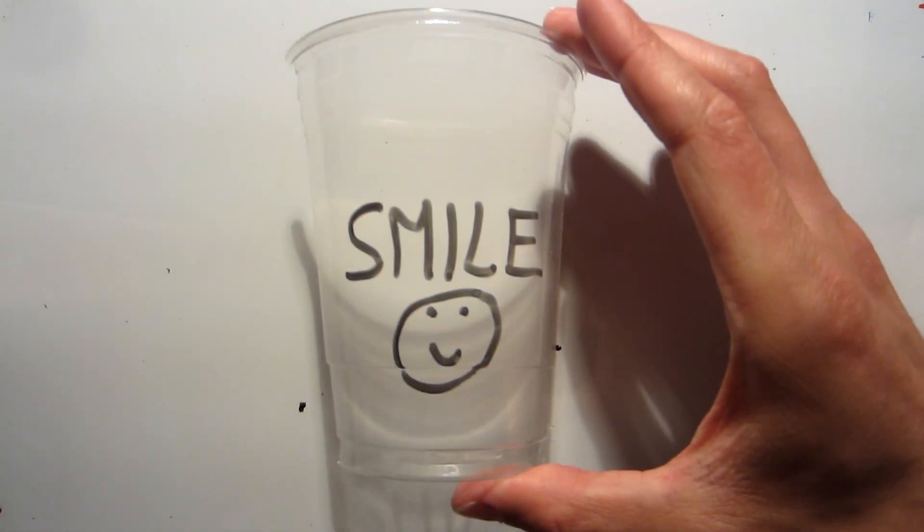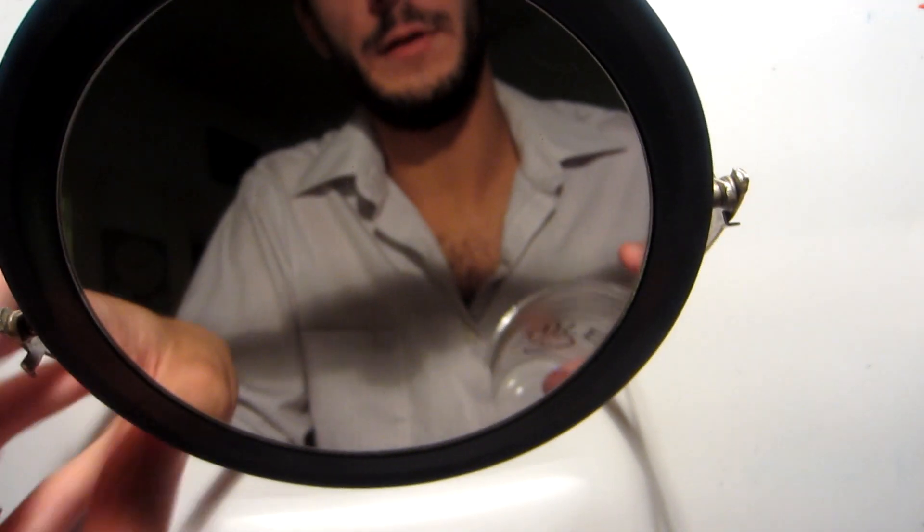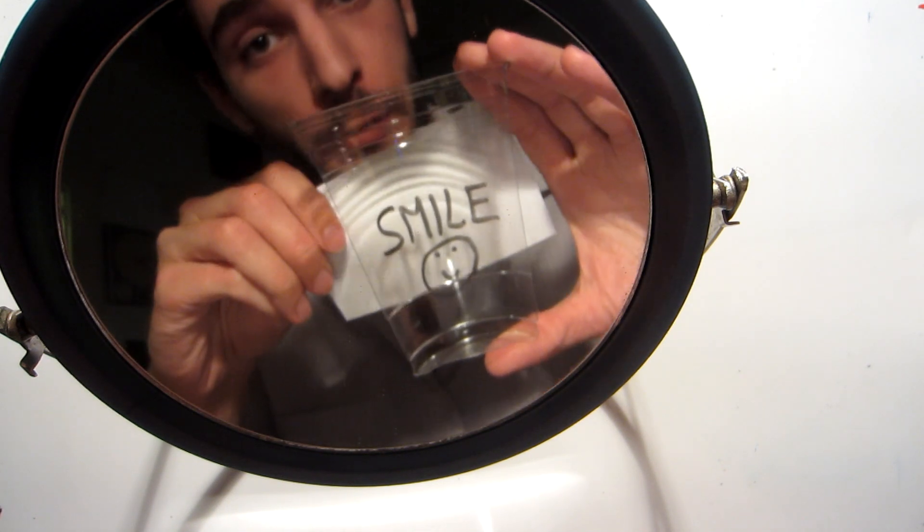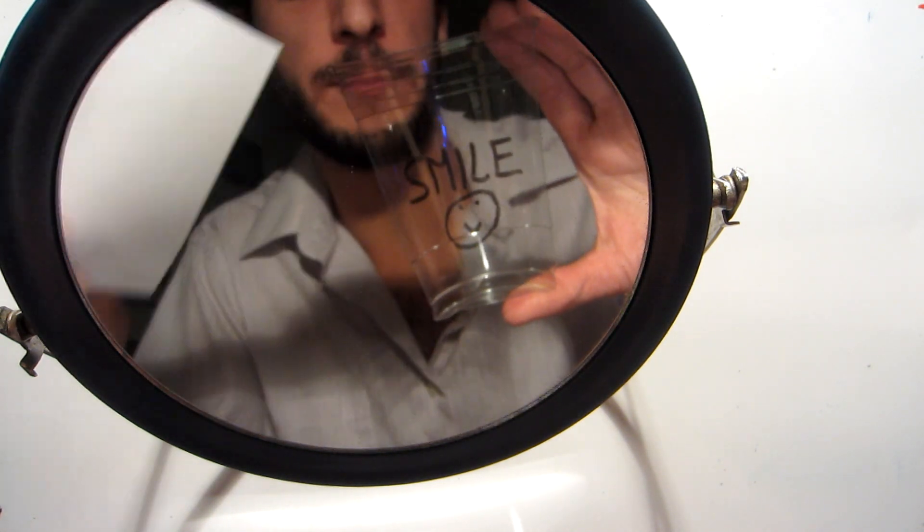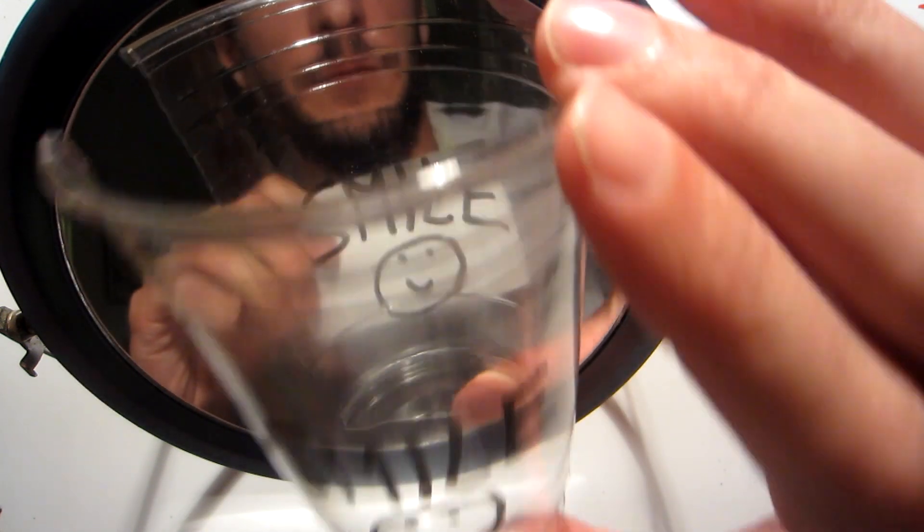The easiest way to convince yourself of this new way of thinking about mirror images is to write something on a clear surface and hold it up so that you can read it. If you look through a mirror now, you should notice that the mirror image no longer appears flipped left and right or up and down. It's simply been flipped through the plane of the mirror so that the ink now appears on the other side of the surface.